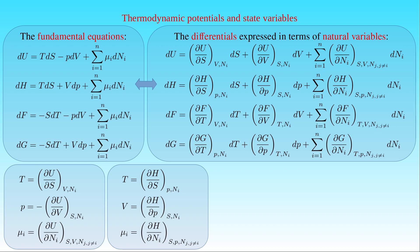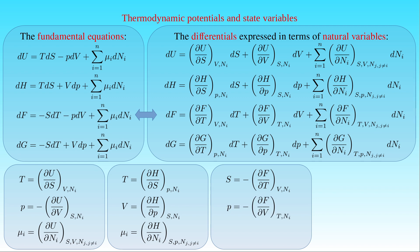We can derive further expressions by comparing the equations in the third line. The first expression states that the entropy S is equal to minus the partial derivative of the free energy F with respect to the temperature T at constant volume V and number of particles Nᵢ. The second tells us that the pressure P is given by minus the partial derivative of F with respect to V at constant T and Nᵢ. The third states that the chemical potential μᵢ is equal to the partial derivative of F with respect to Nᵢ at constant T, V, and Nⱼ where j ≠ i.